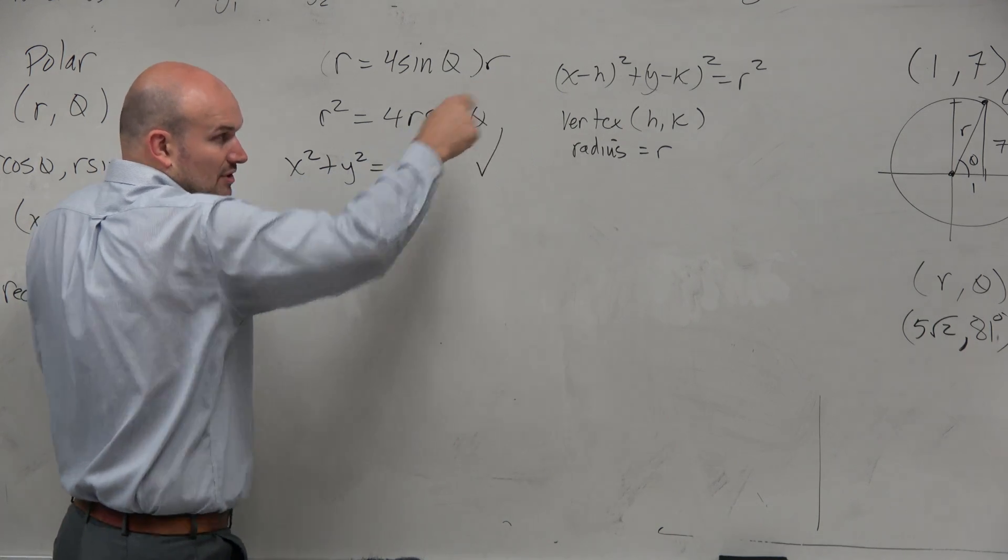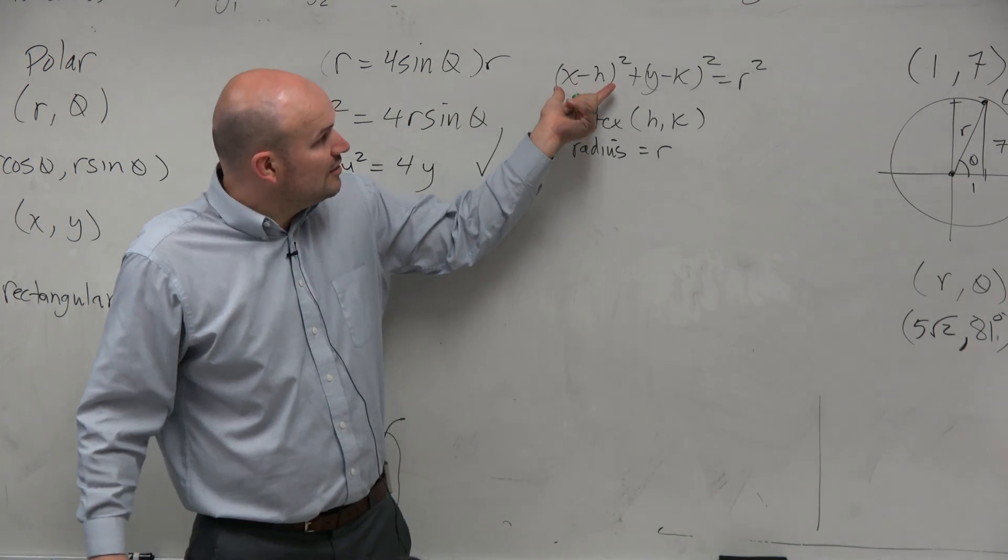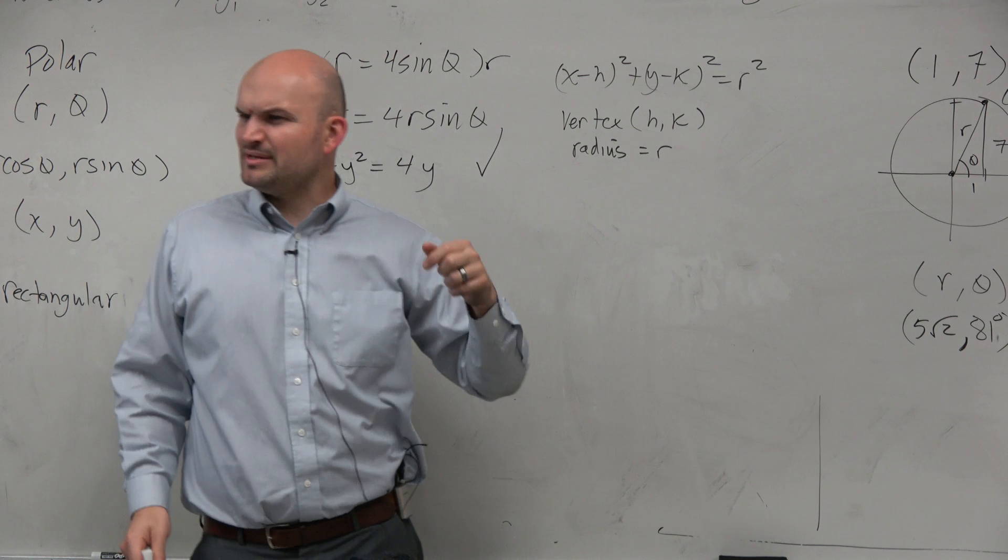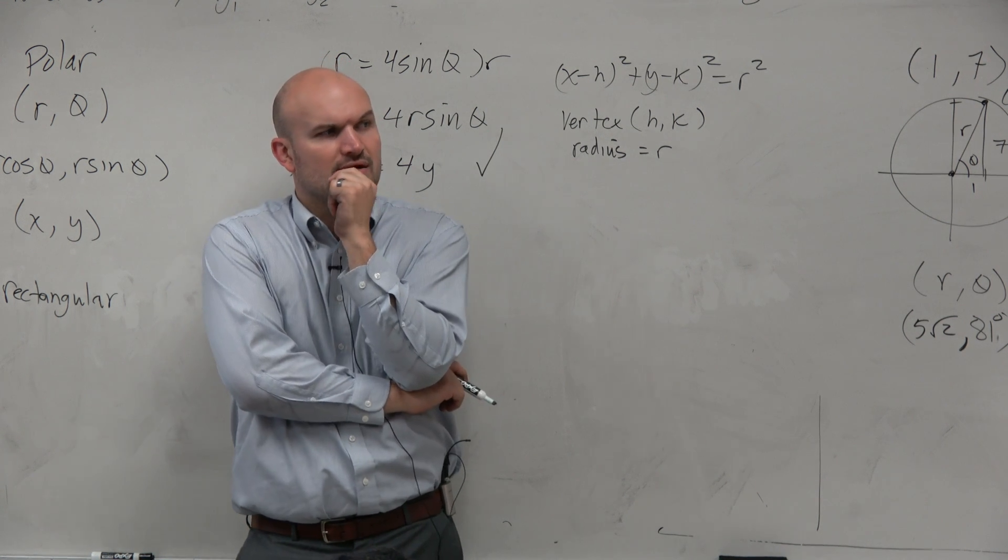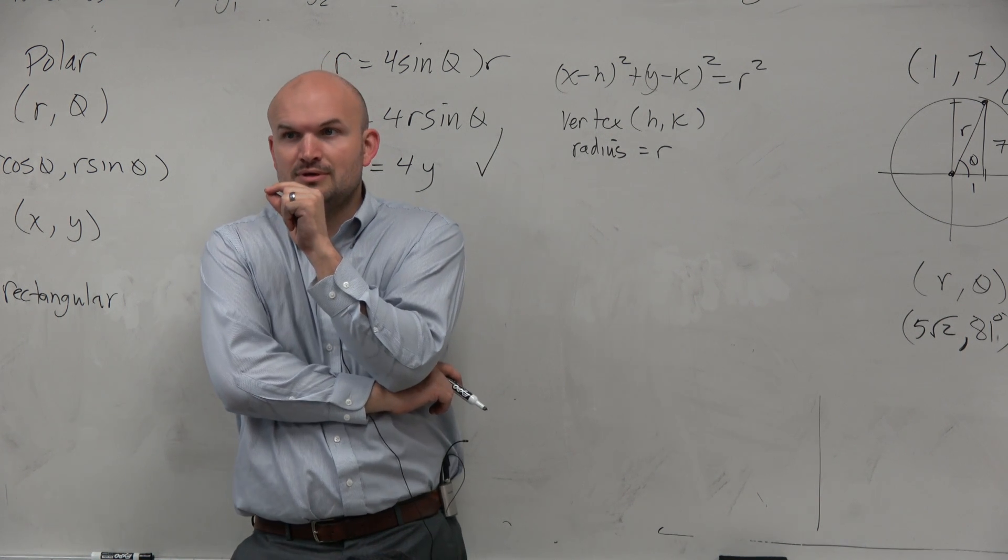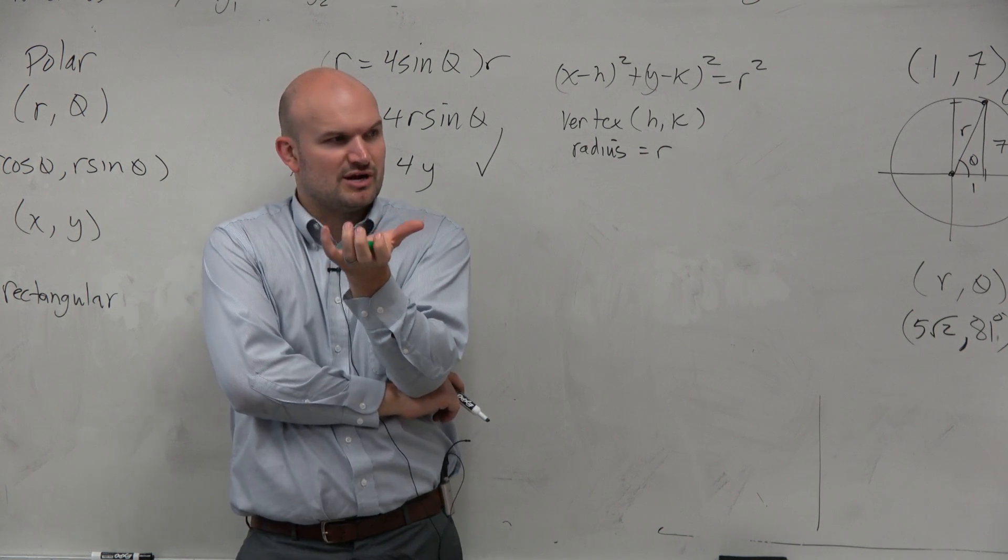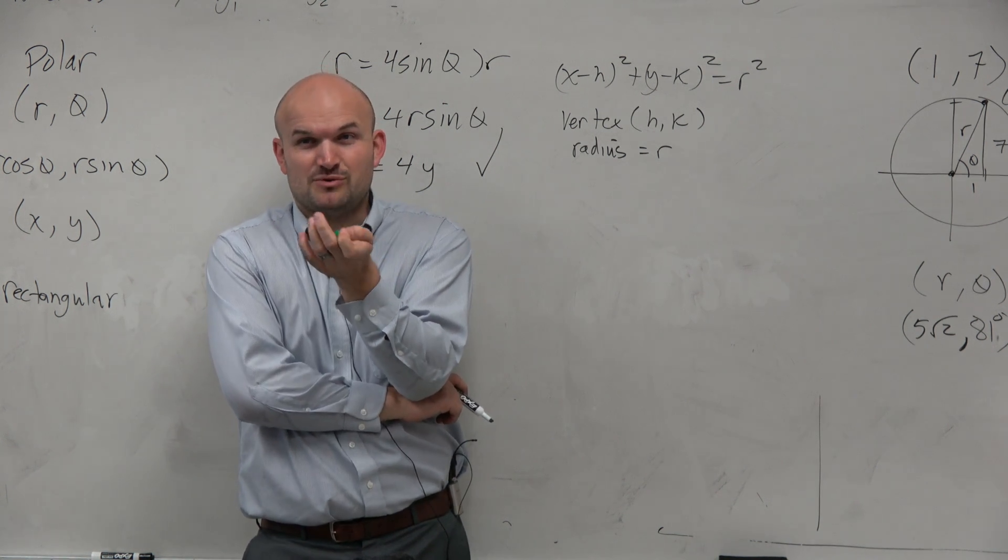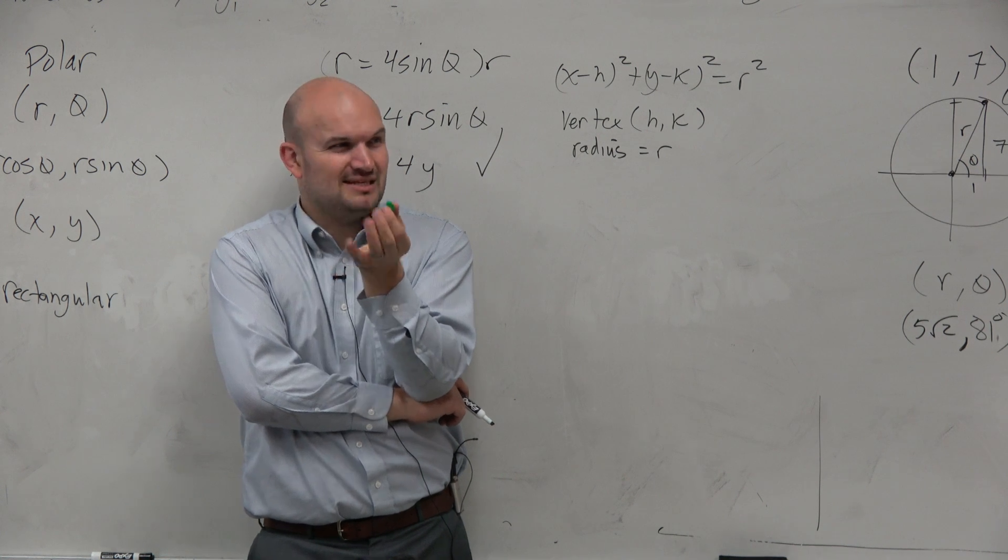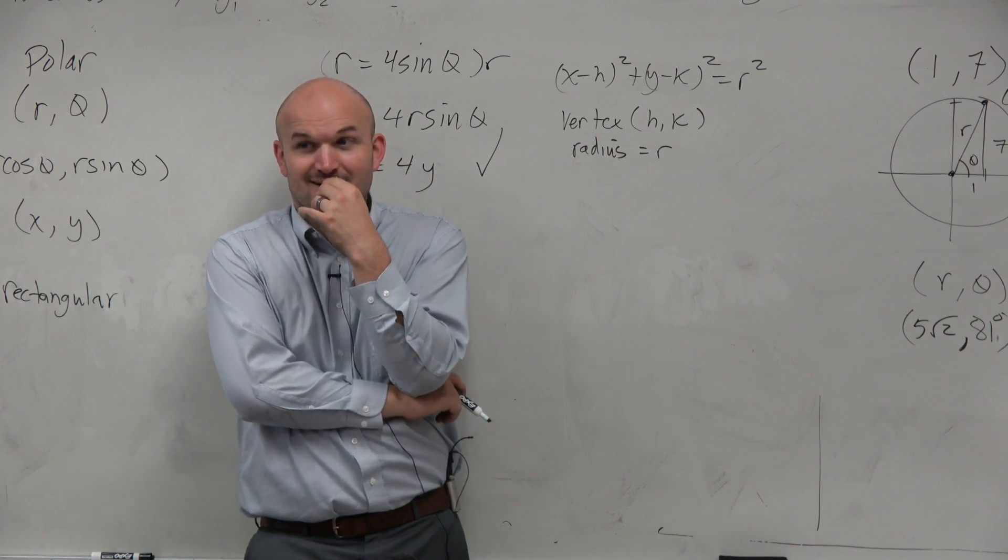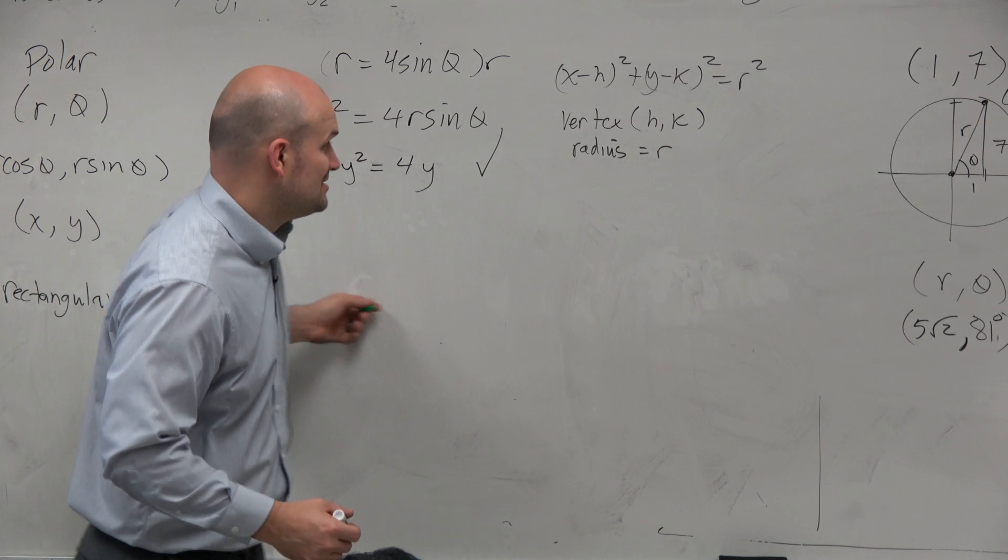So how do we go from this form to that form? Well, a couple of things we notice. We have binomial squared. Oh, wait a minute. Did we talk about binomial squared before? Yeah, I think chapter 2, right? Does anybody remember the process to go from something to creating a binomial squared? Starts with complete and ends with square. Complete the square.